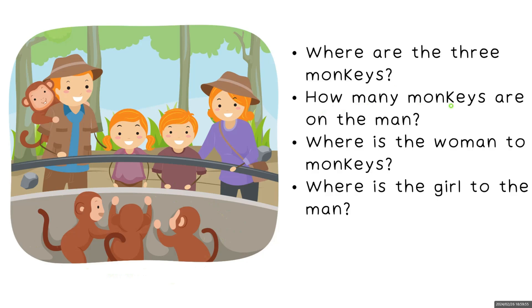How many monkeys are on the man? There is one monkey on the man. Where is the woman to the monkeys? She is in front of them.